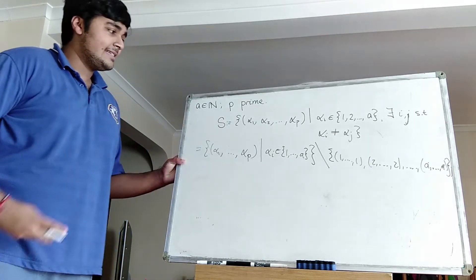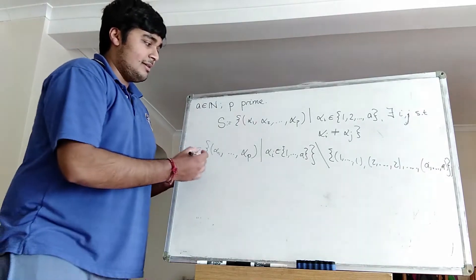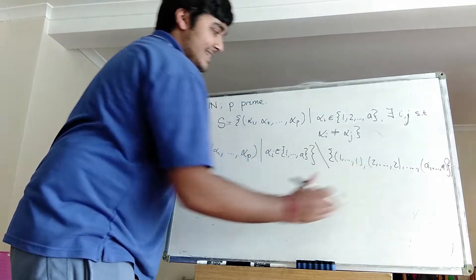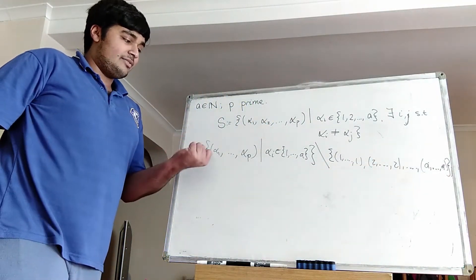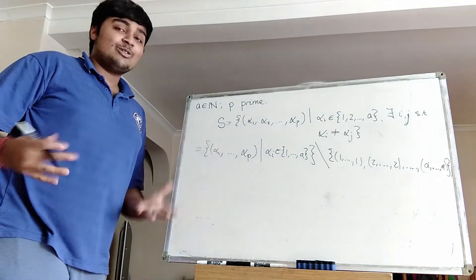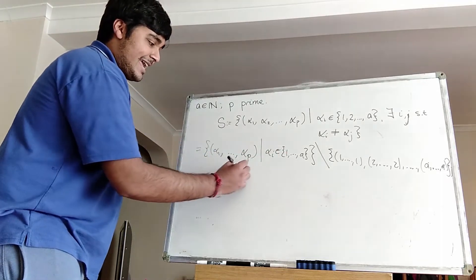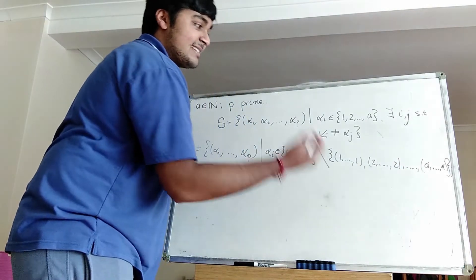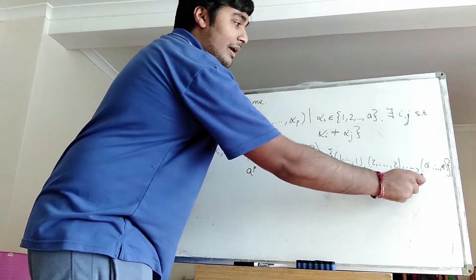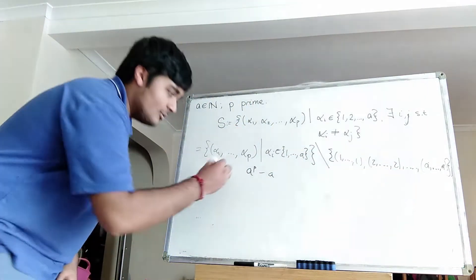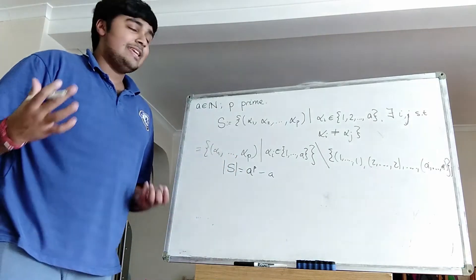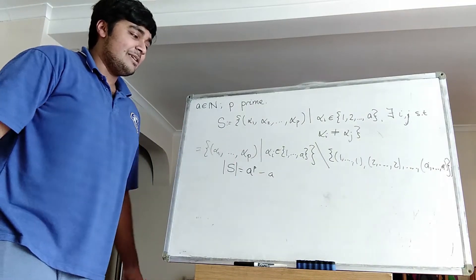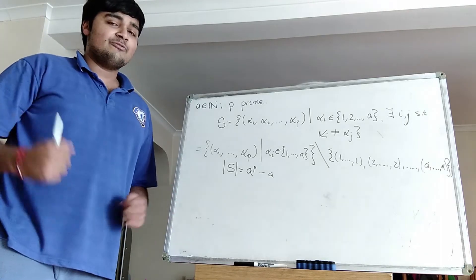How many elements are there in S? Well, the number of elements in S is the number of elements in the first set minus the number of constant sequences. The first set has A choices for each of the P positions, so A to the P elements. The number of constant sequences is A — one for each value from 1 to A. So the cardinality of S is A to the P minus A. And you can already see this is looking Fermat's Little Theorem-ish, because we've got A to the P minus A.